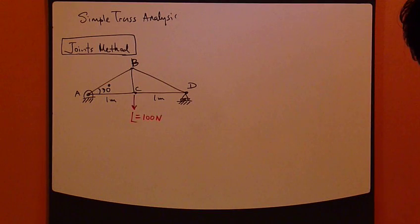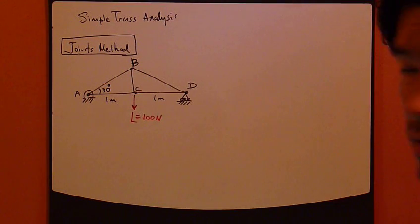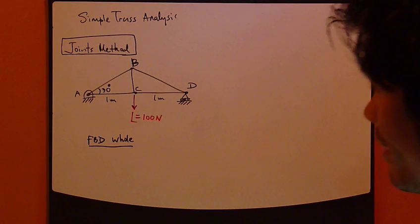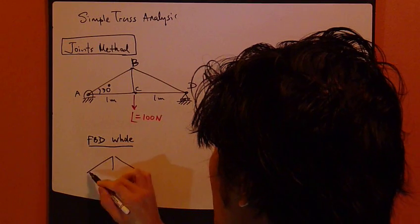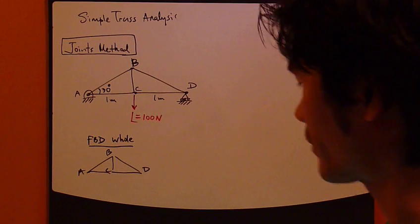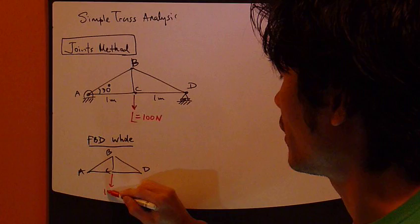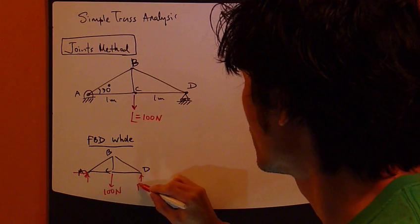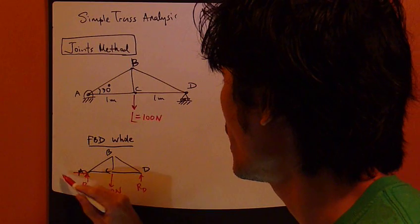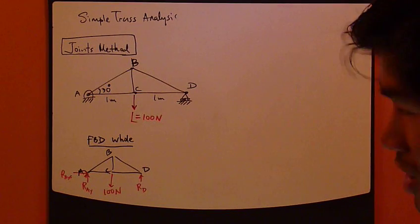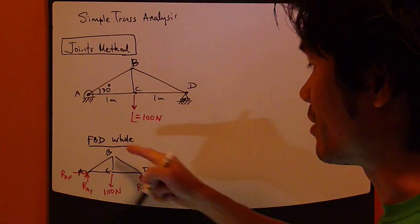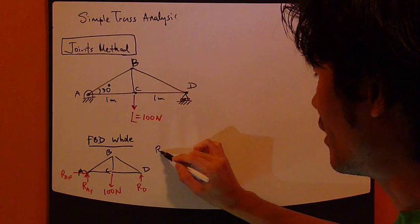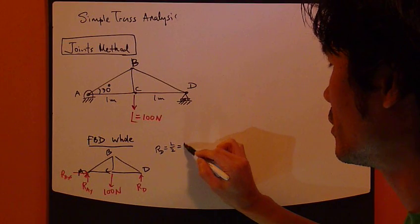First thing you should do is draw a free body diagram for the entire truss. It's not the joint method just yet, it's just for the whole thing. Let's draw that. Label it A, B, C, and D. I have this 100 Newton load. I have this reaction force at D, reaction force at AY, and RAX. And apply the equations for this whole free body diagram. This is a rigid body, just like before, exact same thing. The result is RD equals one half of the load, and that equals 50 Newton.